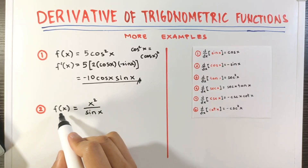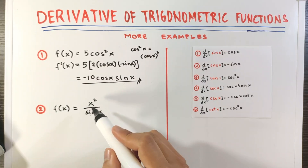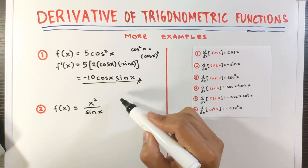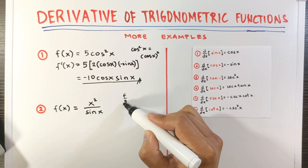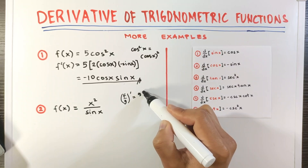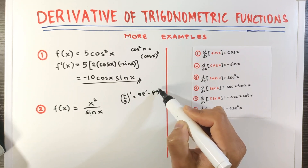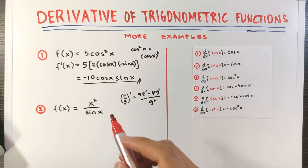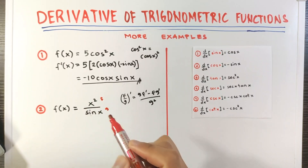For example number 2, we have f of x equals x squared over sine x. This is in quotient form, which means we need to use the quotient rule. Recall that the derivative of f over g is equal to g times the derivative of f, minus f times the derivative of g, all divided by g squared. In this given function, f is x squared and g is sine x.